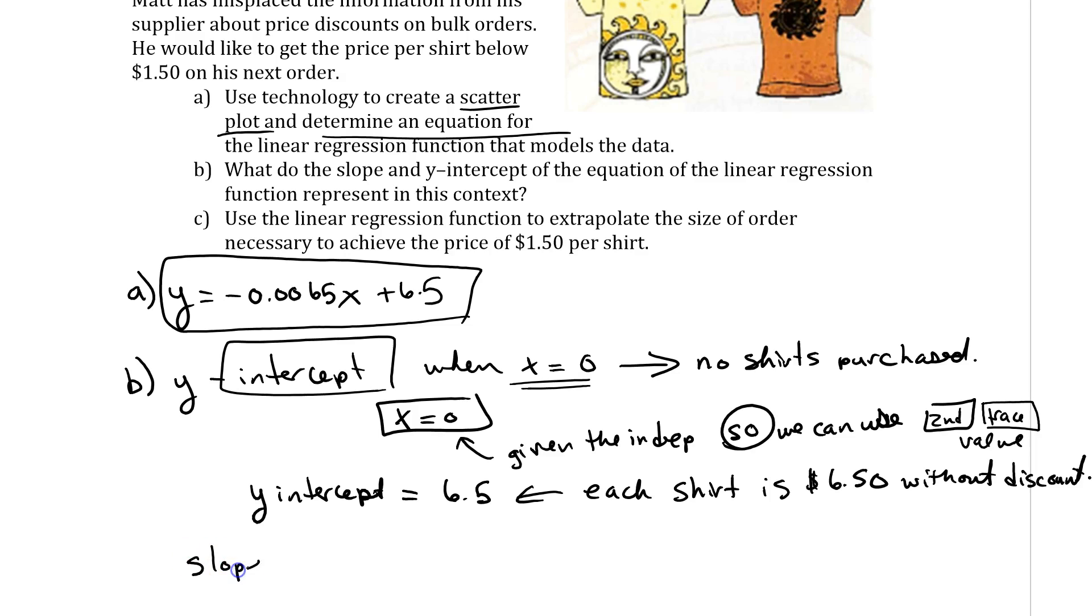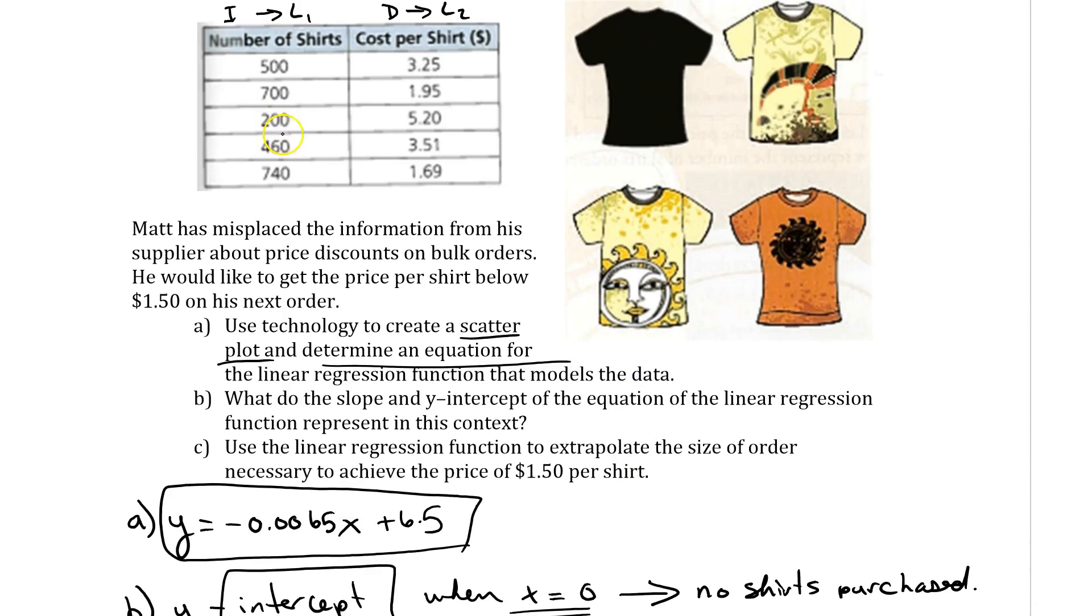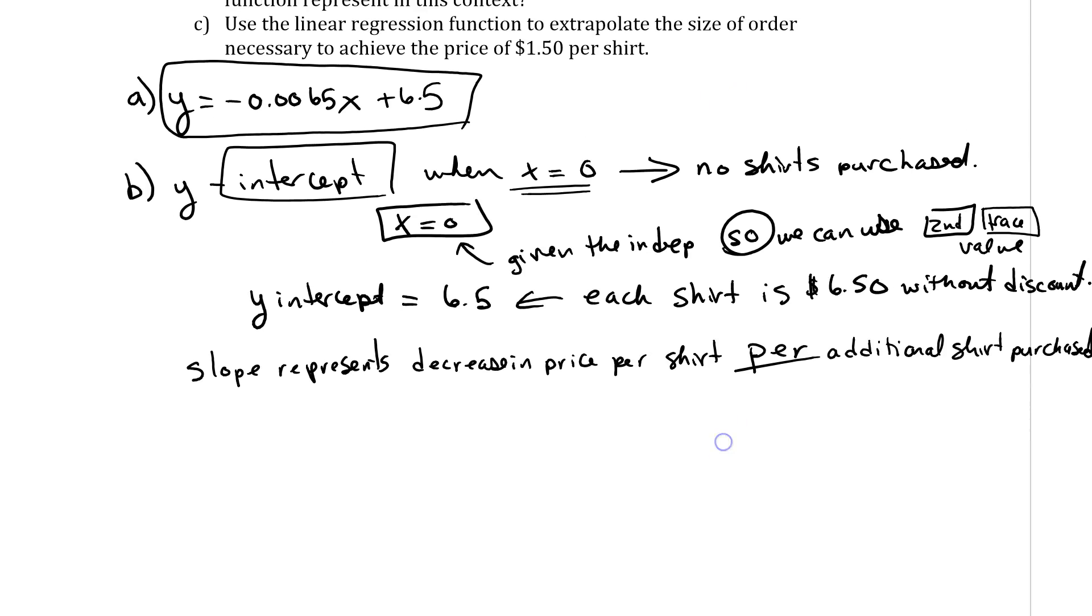We want it to go down to $1.50 per shirt. So the slope represents the decrease in price per shirt. There's a decrease in price per additional shirt purchased. For example, when you buy 200, the cost is $5.20 per shirt, whereas when you buy more, like 740, the cost per shirt goes down to $1.69.